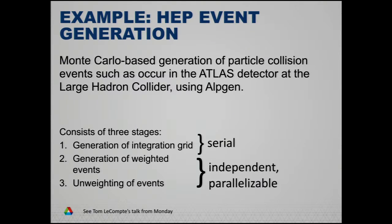This consists of generating an integration grid, sampling the phase space, generating weighted events based on that, and then unweighting the events. The weighted events have a probability associated with each one, and there's a probability cutoff for the events when we unweight — we throw away a bunch of them based on the weight. The generation of the integration grid stage is done once, and then we use that same integration grid for all of the event generation jobs that come after.